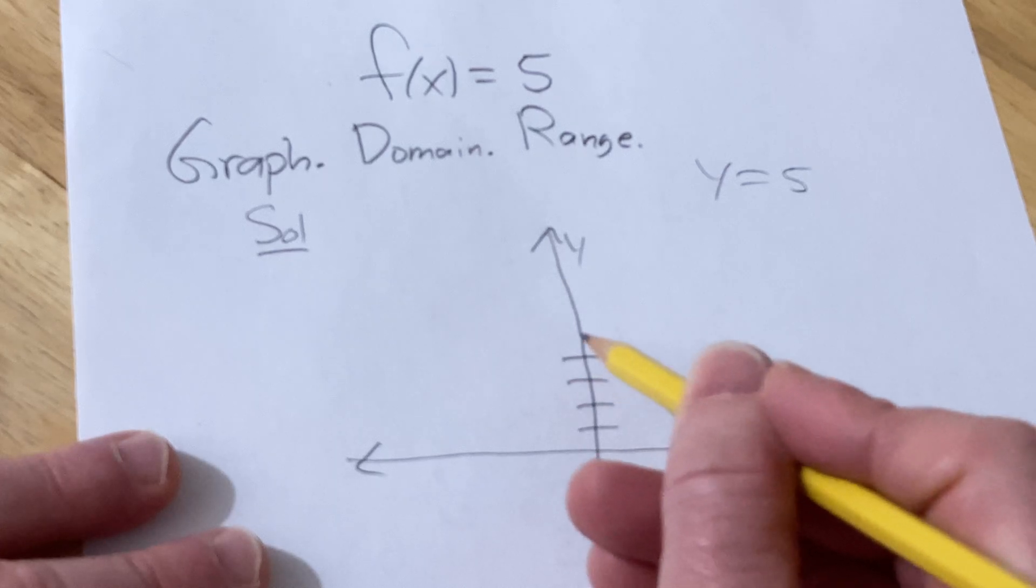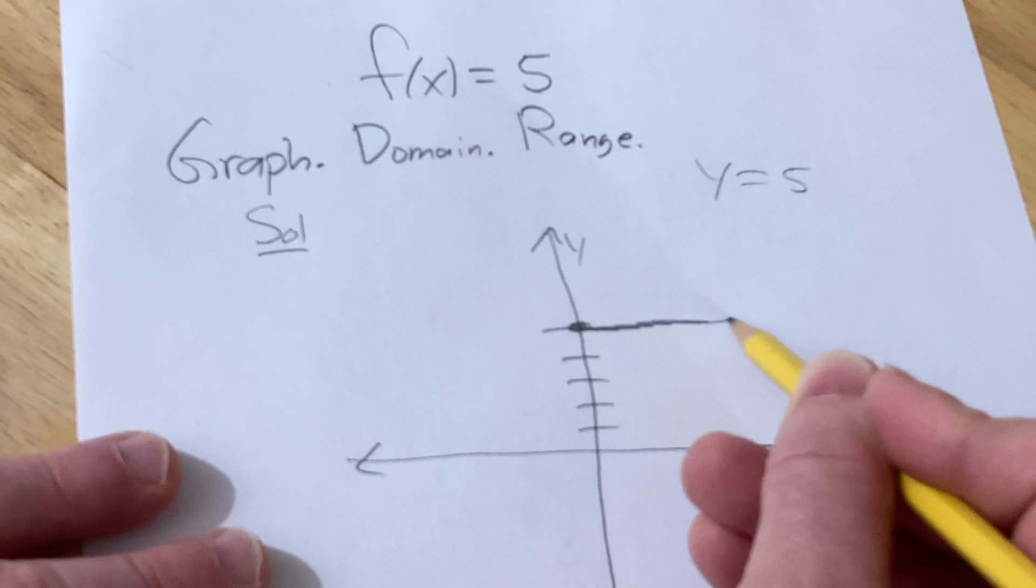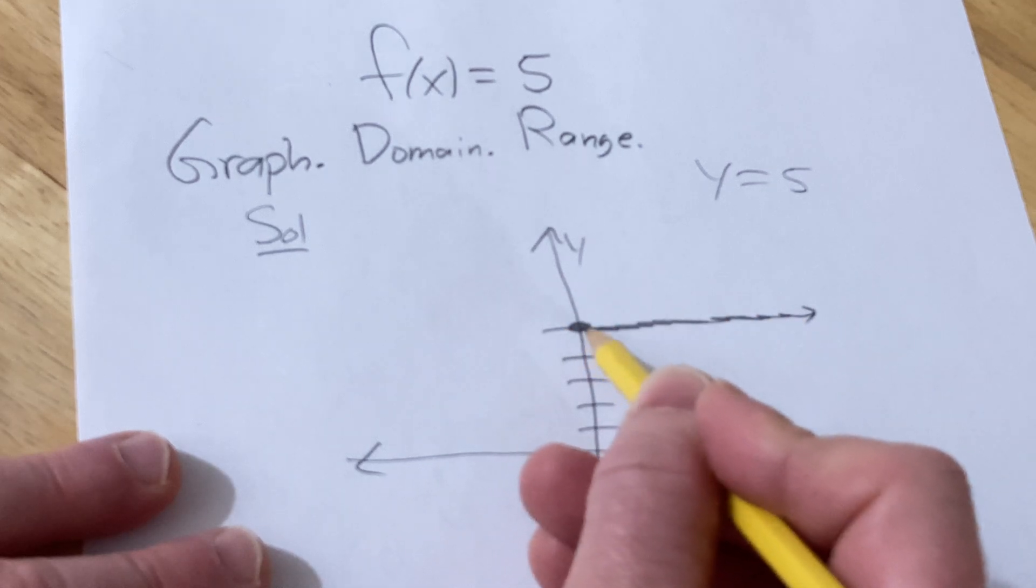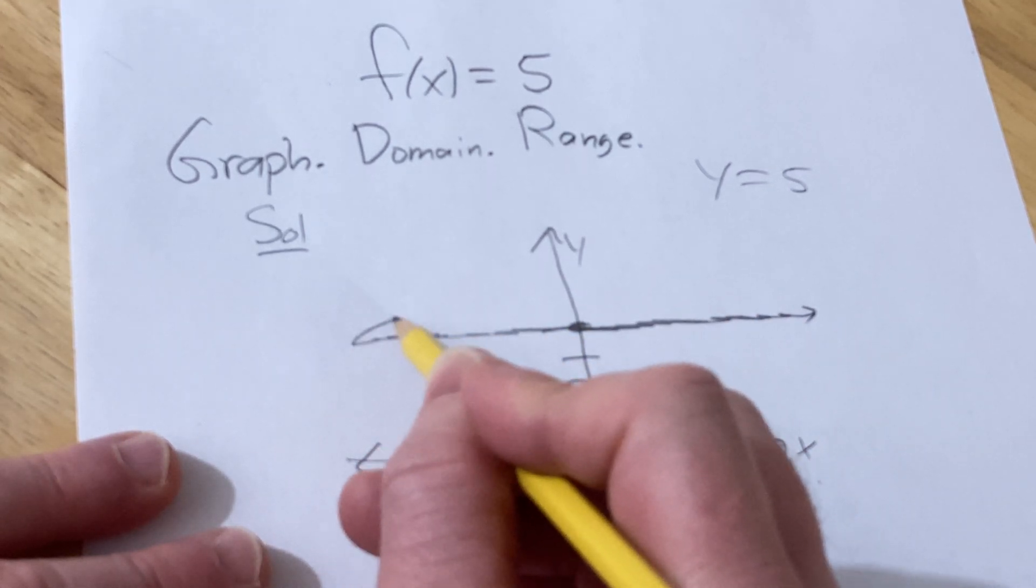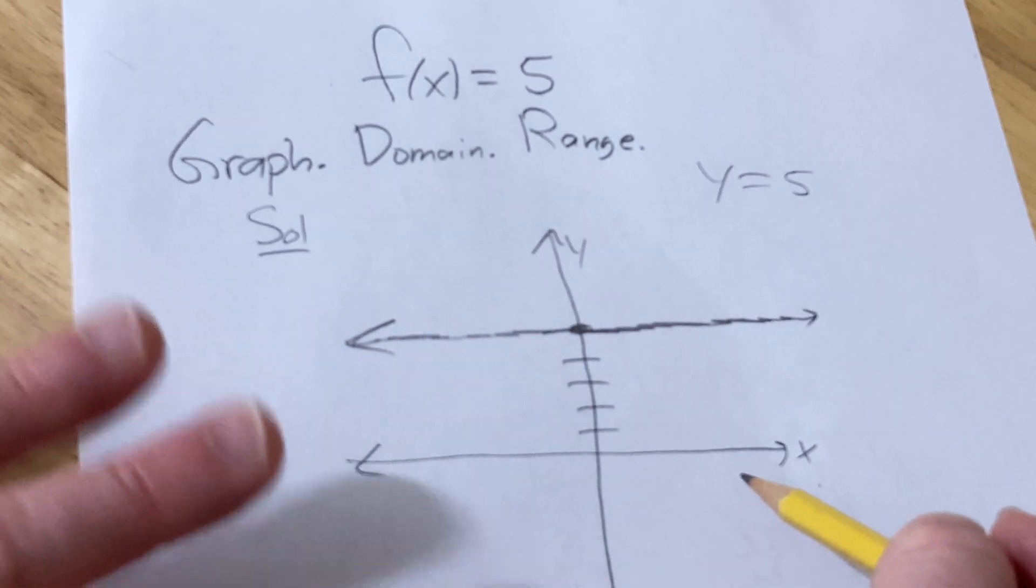So 1, 2, 3, 4, 5. It's always going to be 5. So basically you're just looking at a horizontal line, y equals 5. So that's the graph.